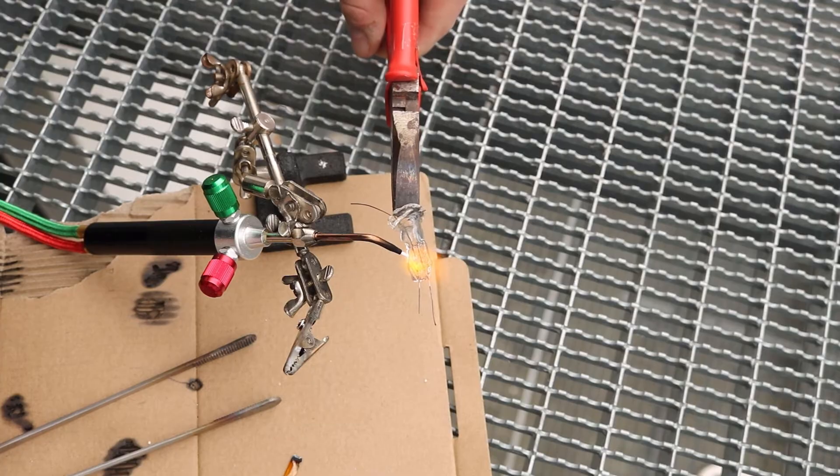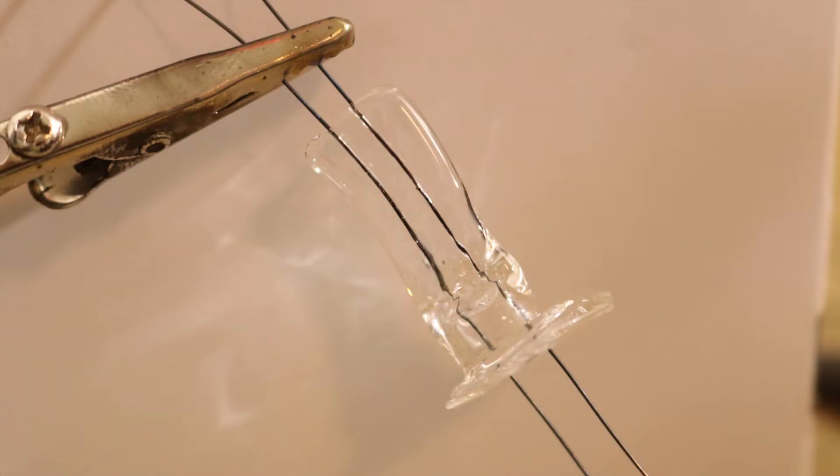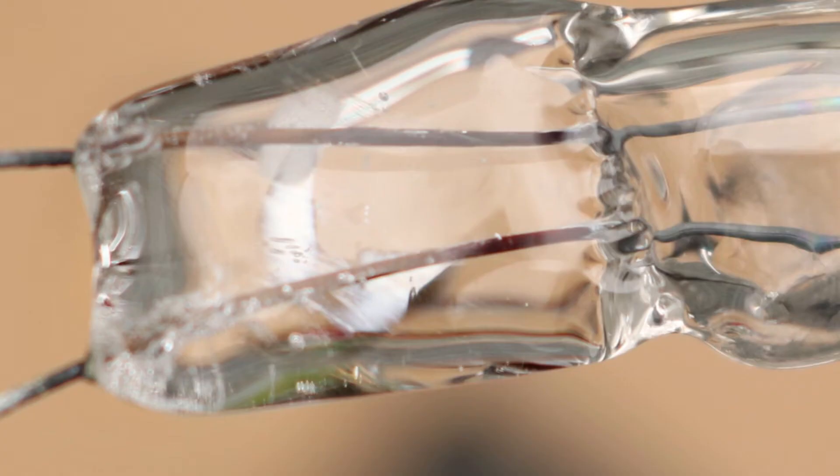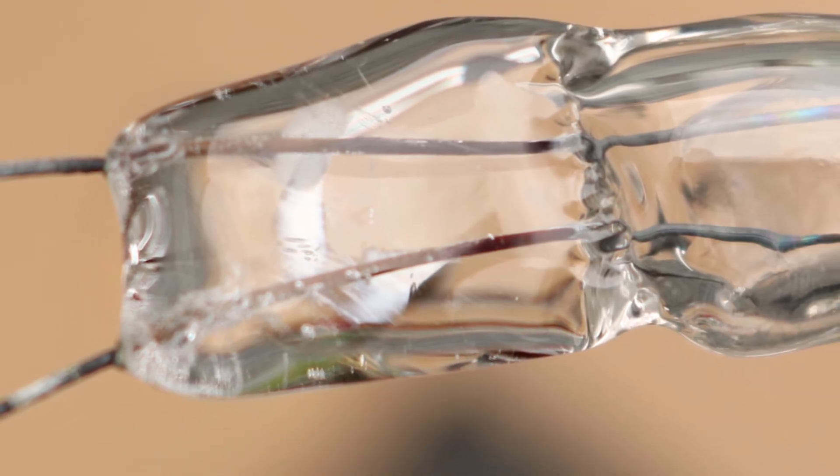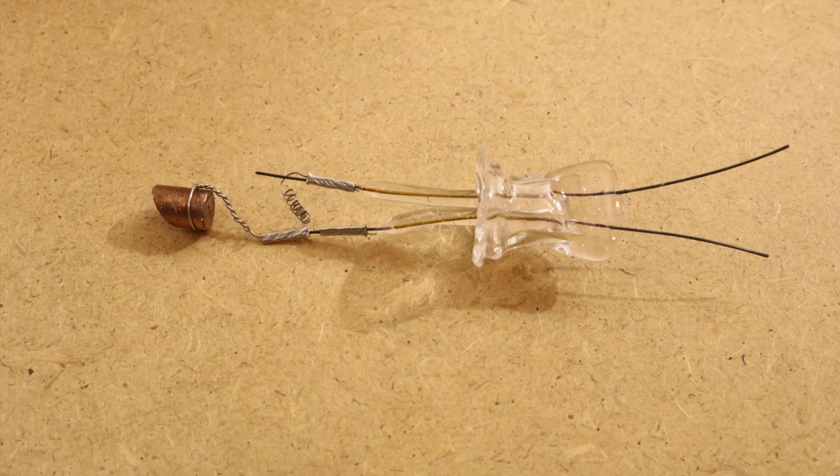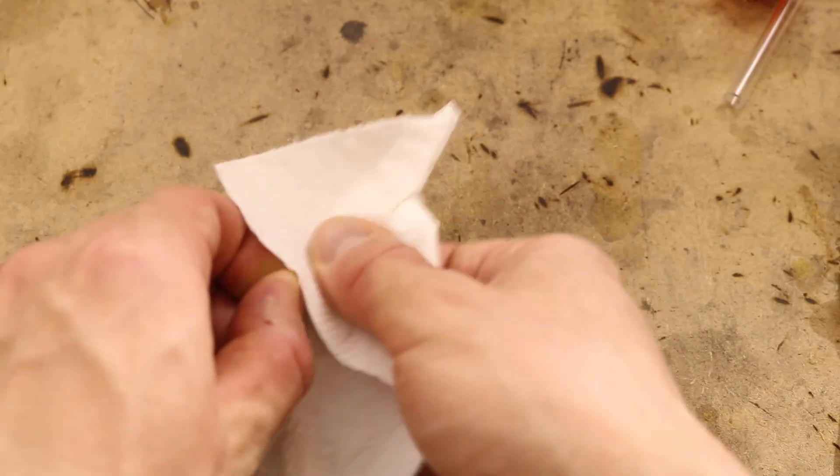After trying a bunch of stuff and only getting black feed-throughs or some quite golden but with bubbles, I finally found a way to do it.